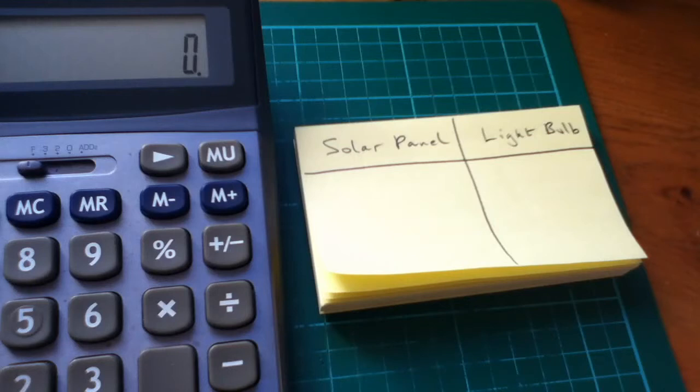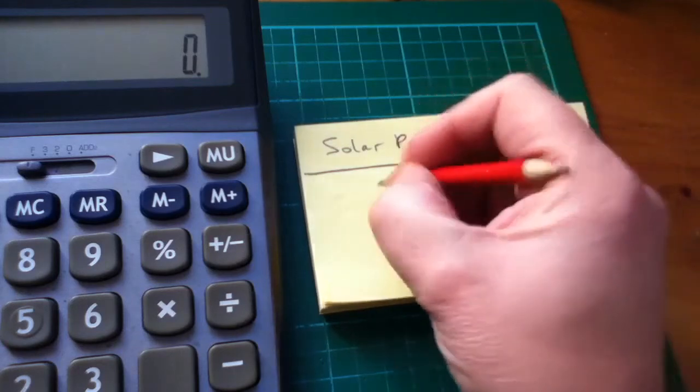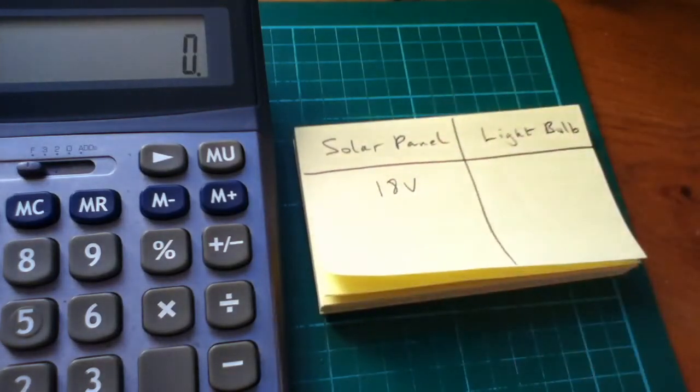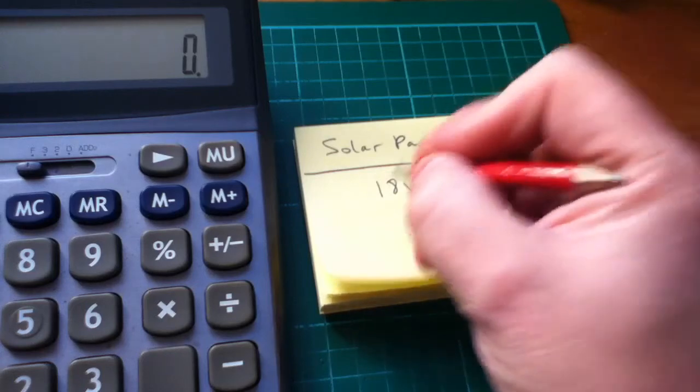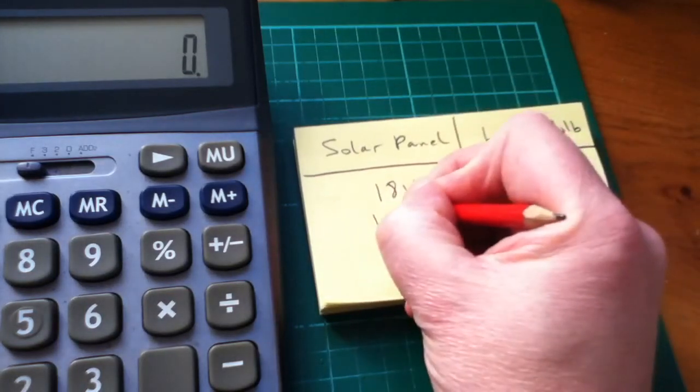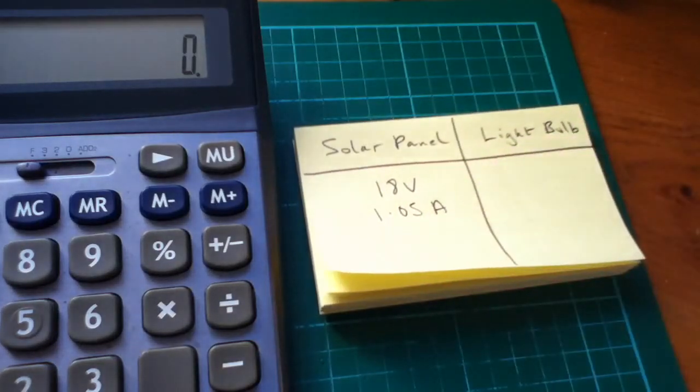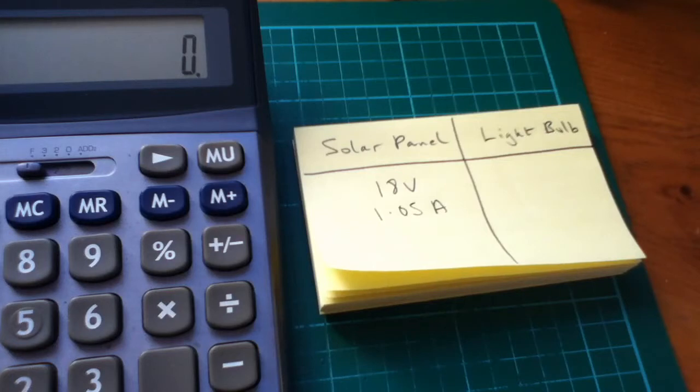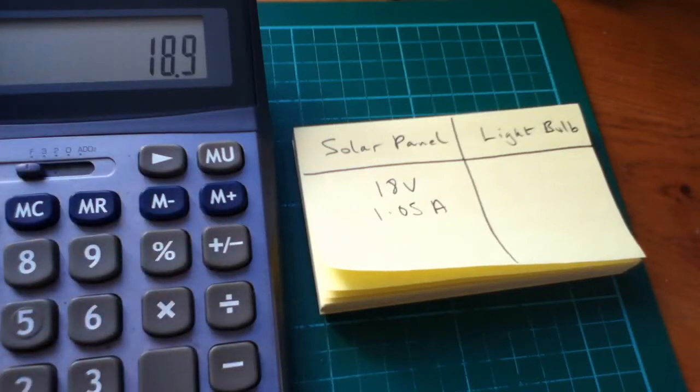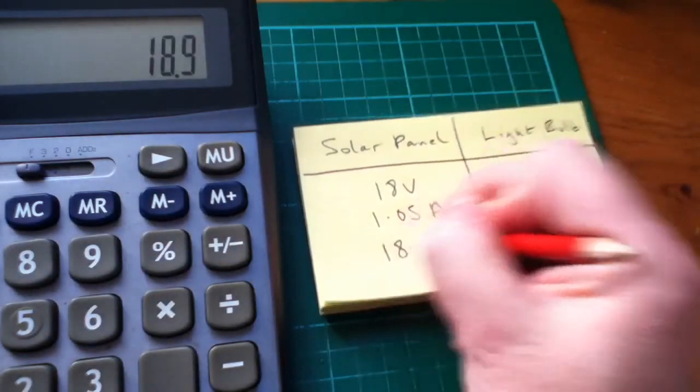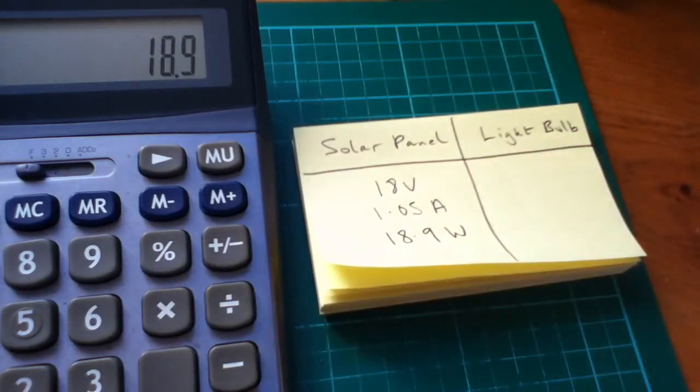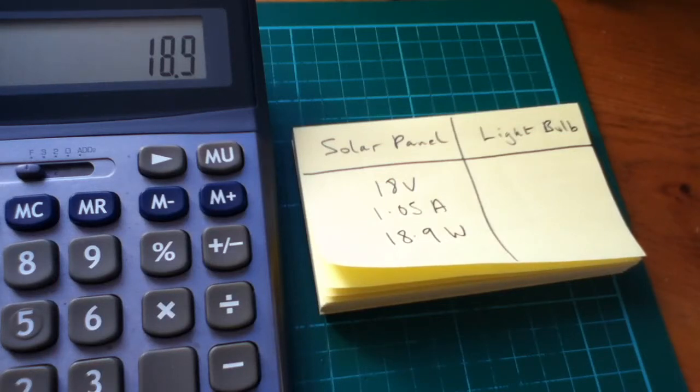So, let's make a list of some of these numbers. On the solar panel, we had for the working voltage, 18 volts. And we also had written on that label on the back, 1.05 amps. So, if we multiply 18 by 1.05, we get 18.9 watts. Now, that comes in a bit low. If we wanted to get the full 20 watts, we'd need either a little bit more current or a little bit more voltage.